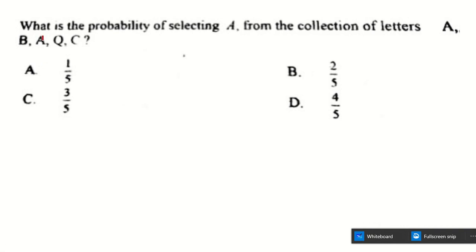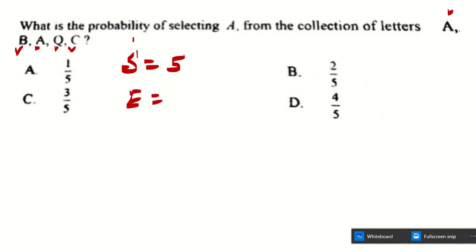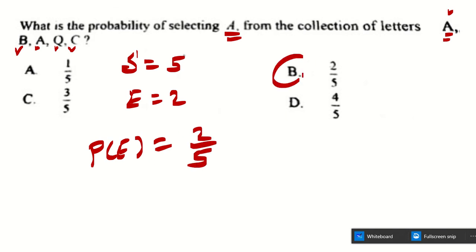The next question: what is the probability of selecting the letter A from the collection of letters A, B, A, Q, C? First count all letters: there are 5 total, so the sample space is 5. The letter A appears twice, so the event count is 2. The probability is 2 over 5, found at choice B.